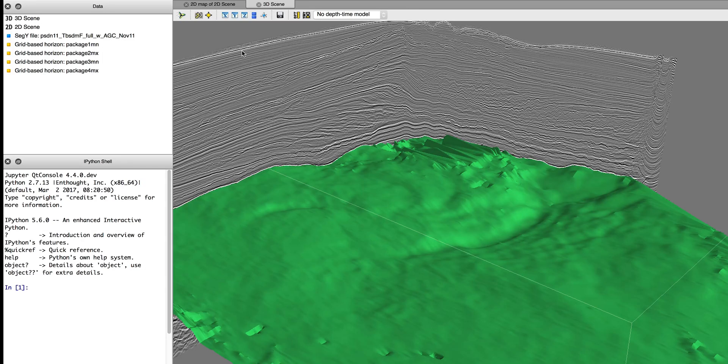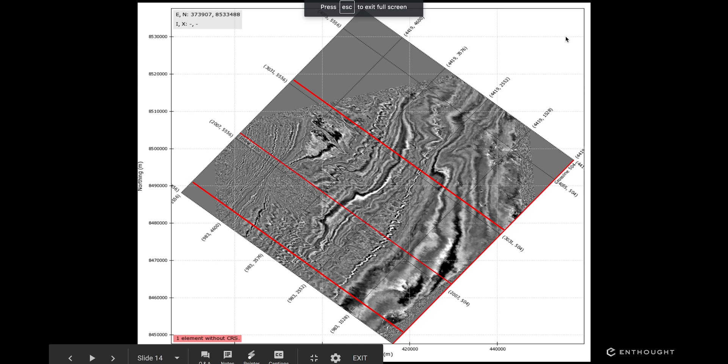So just to demonstrate that, we're going to bring up Enthought's geocanopy application, and we're going to load up the Poseidon dataset, which is open data that we applied our automated interpretation package to. In this view, we're showing you a time slice through that data in map view. The red lines represent the three seismic sections that were sampled and interpreted by the experts.